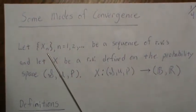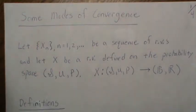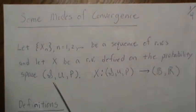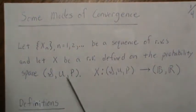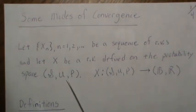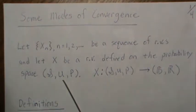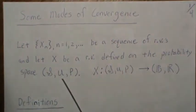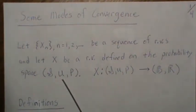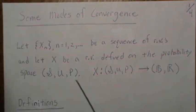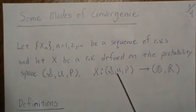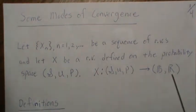Let X_n be a sequence of random variables and let X be a random variable defined on the probability space (Ω, F, P), where Ω is the sample space, P is the probability of each outcome, and F is called a sigma field — it's a way of combining elements of the sample space into events, dealing with unions and intersections. A random variable is simply a function from this probability space to the real numbers.